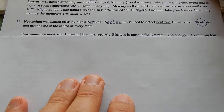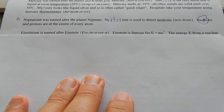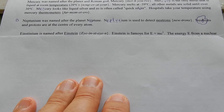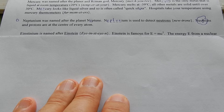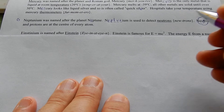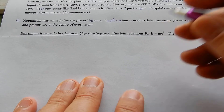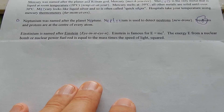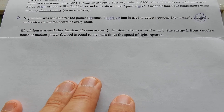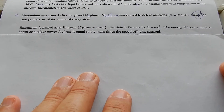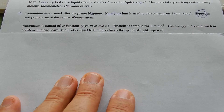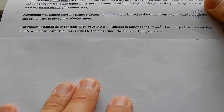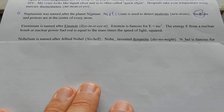Einsteinium is named after Einstein. Einstein is famous for E equals MC squared. The energy E from a nuclear bomb or nuclear power fuelled rod is equal to the mass times the speed of light squared.